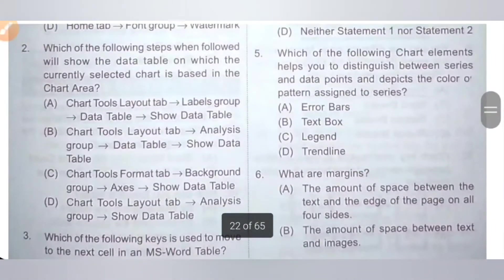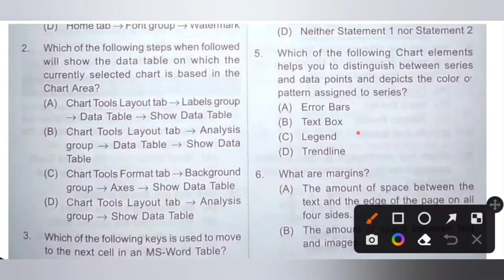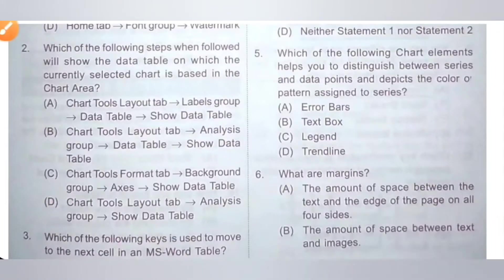Fifth question: which of the following chart elements helps you to distinguish between series and data points and depicts the color or pattern assigned to a series? The options are A: Error bar, B: Text box, C: Legend, D: Trend line. The Legend helps you distinguish between series and data points. Option C, Legend, is the correct answer.